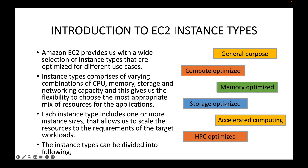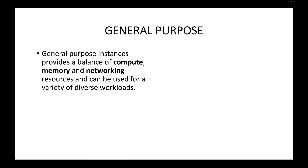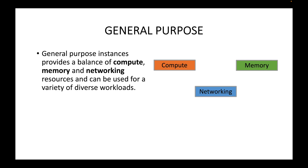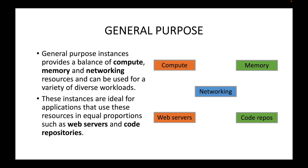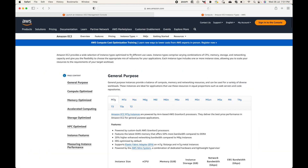Let's look at each one by one. General purpose instance types provide a balance of compute, memory, and networking resources that can be used for a variety of workloads. These instances are ideal for applications that use these resources in equal proportion, such as web servers or code repositories.